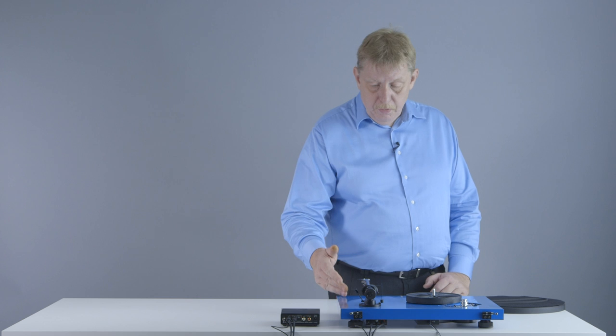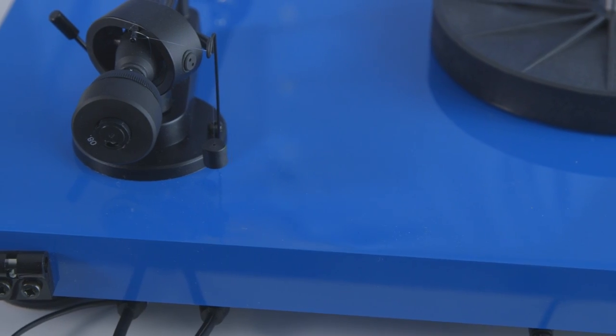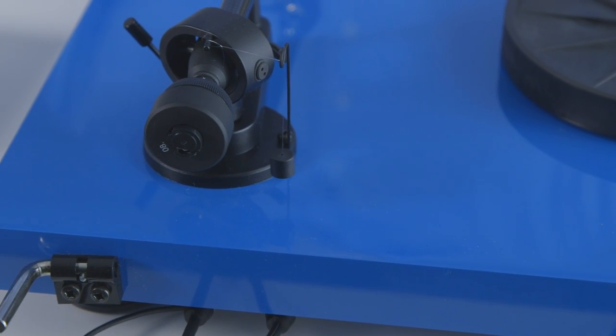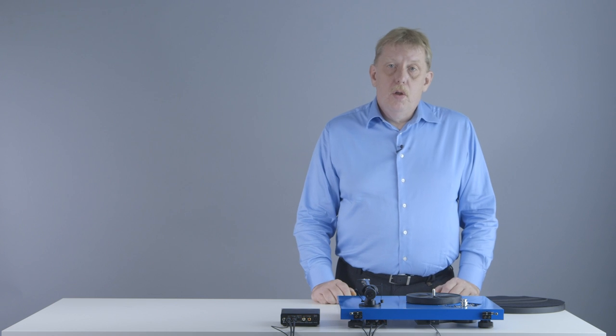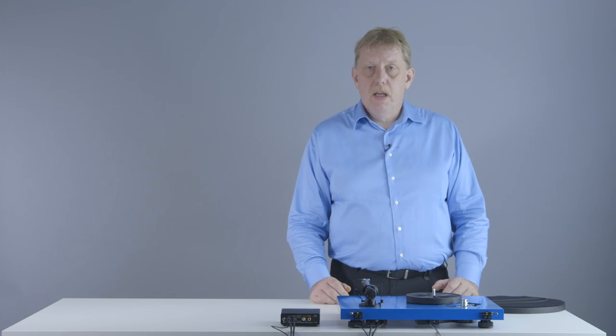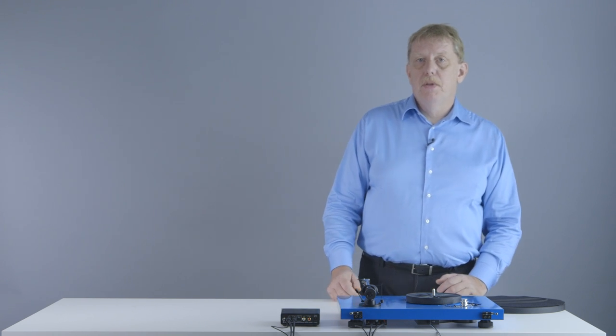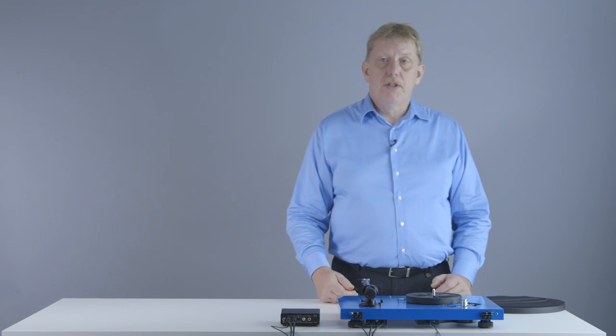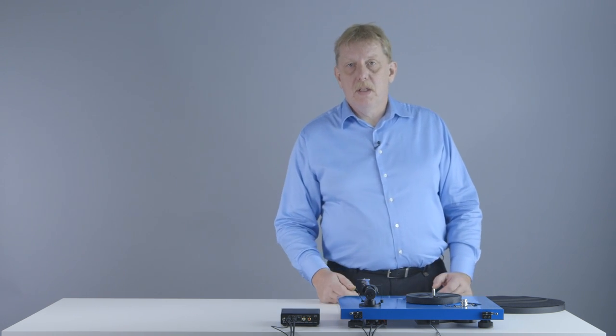We want the plinth to further absorb any unwanted resonances. With the bigger turntables you will even see heavier plinths. We call that mass loading. The heavier the plinth is, the better it can absorb resonances or vibrations that we don't want the cartridge to pick up.